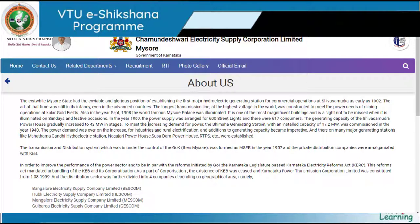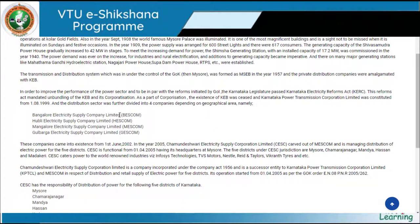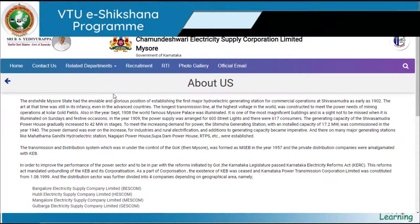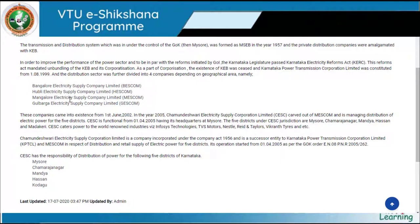The generating capacity back then was 42 megawatts, and later they constructed another generating station. The entire Karnataka Electricity Supply Corporation is divided into five major sectors or companies: one is BESCOM — Bangalore Electricity Supply Company; next is Chamundeshwari Electricity Supply Company, which covers the Mysore region; and then there is MESCOM — Mangalore Electricity Supply Company Limited.